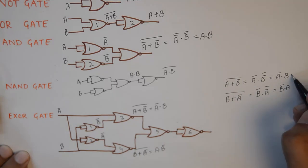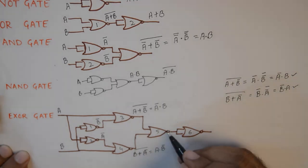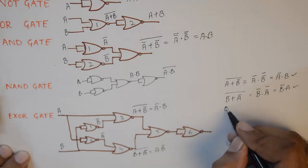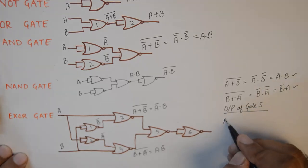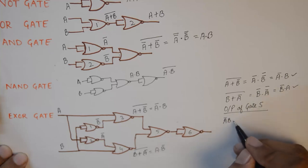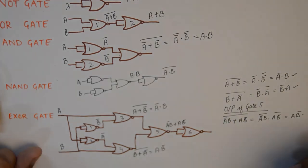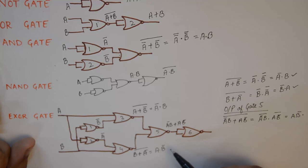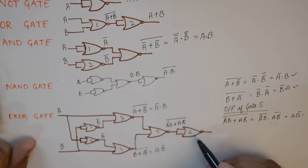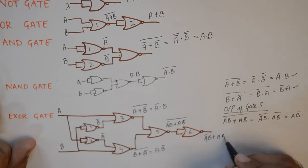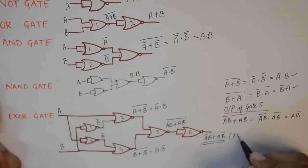These two results — A̅B and AB̅ — are the inputs to gate number five. The output of gate number five will be (A̅B + AB̅) bar whole bar, which after the final inversion gives us A̅B + AB̅. This is the desired output for the XOR gate.